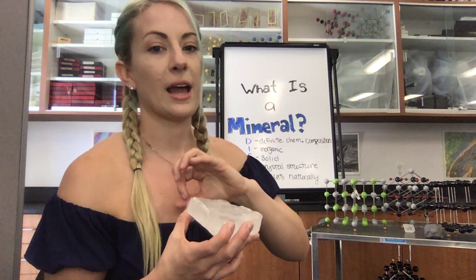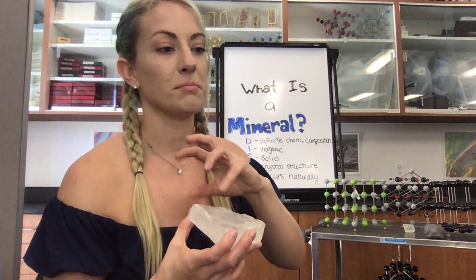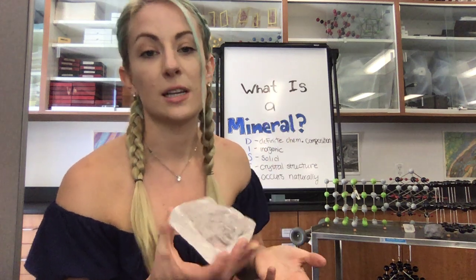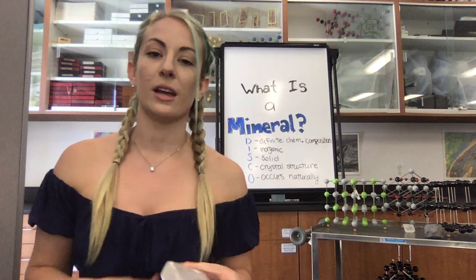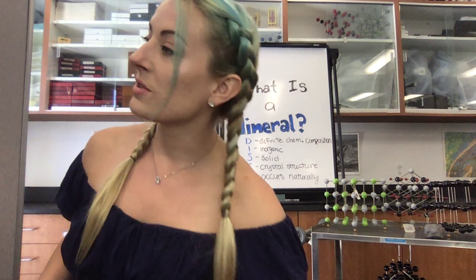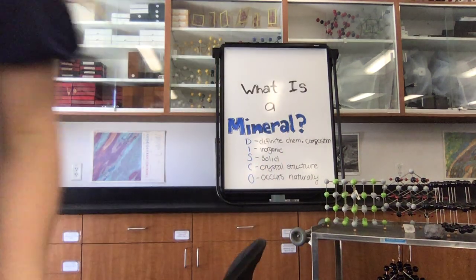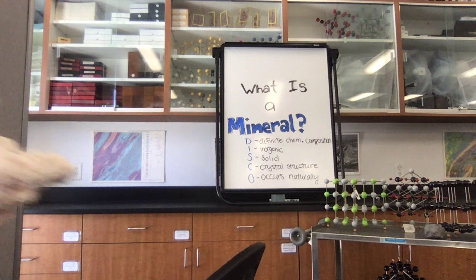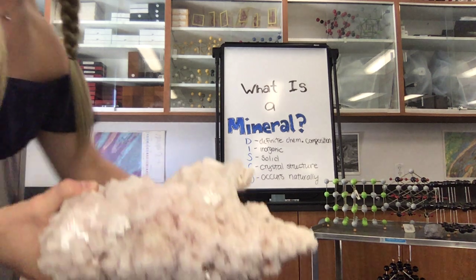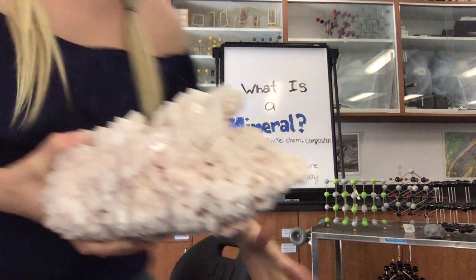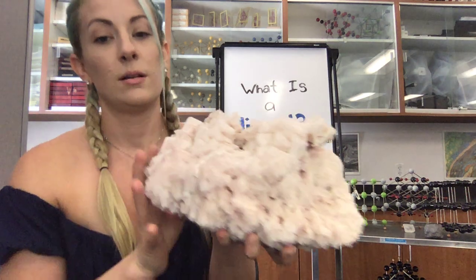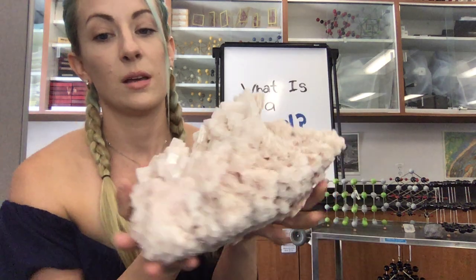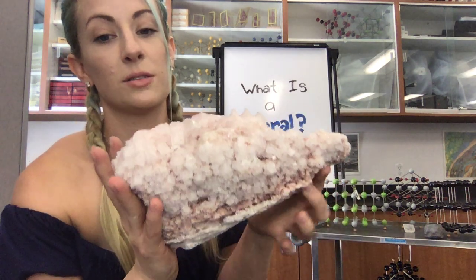It can have some impurities, as we call it, that can slightly change the color of it. An example of salt that has a slightly different color is this here. This is a specimen from Cyril's Valley.